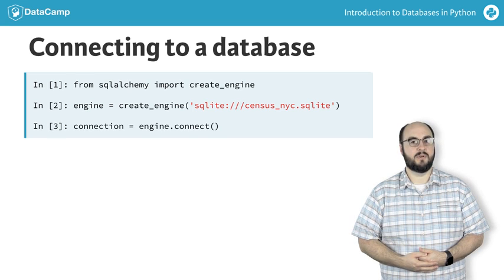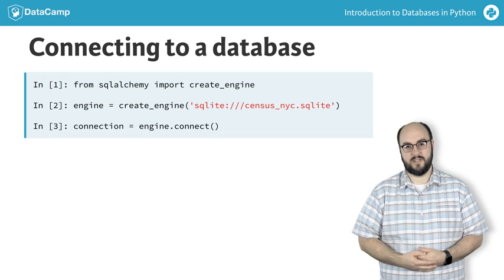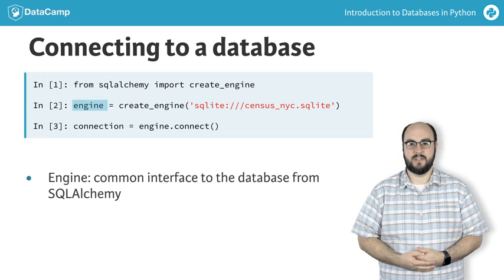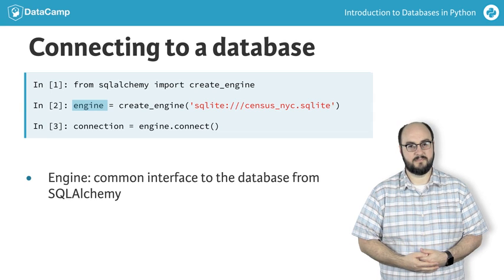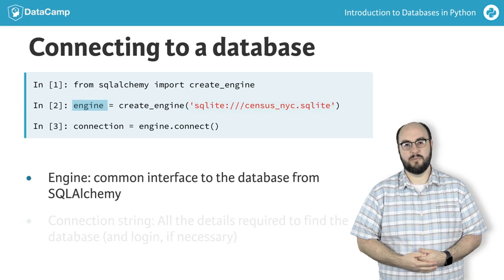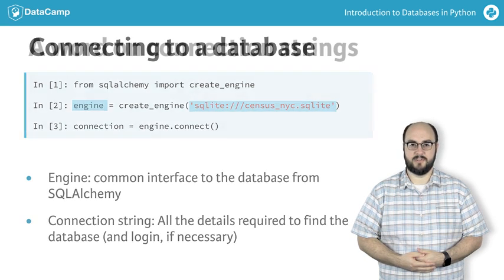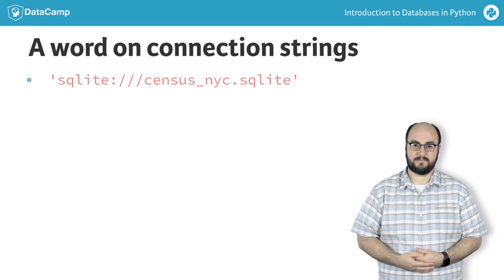It's worth noting that SQLAlchemy won't actually make the connection until we give it some work to execute. To review, an engine is the common interface to the database, which requires a connection string to provide the details used to find and connect to the database. Let's talk a bit more about connection strings. In their simplest form, they tell us what kind of database we are talking to and how we should access it.